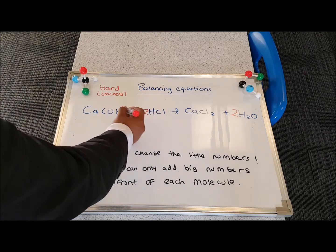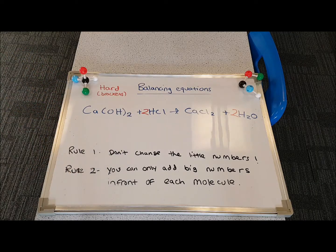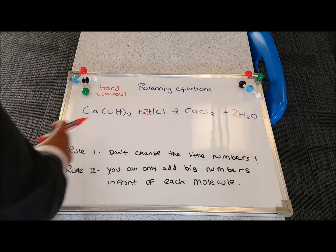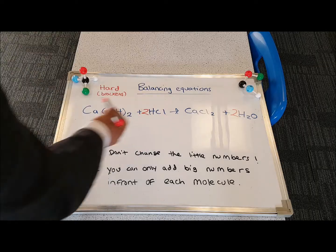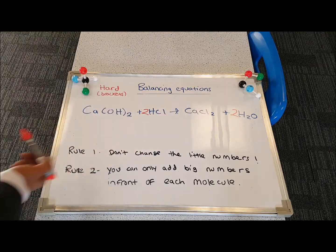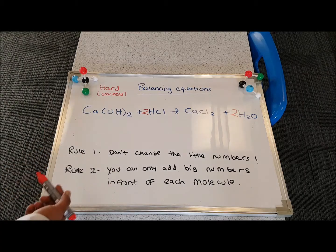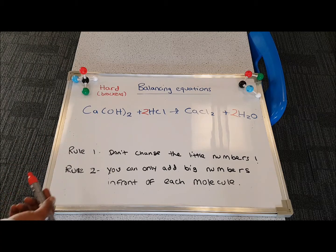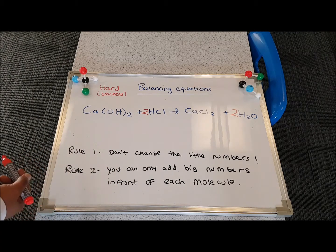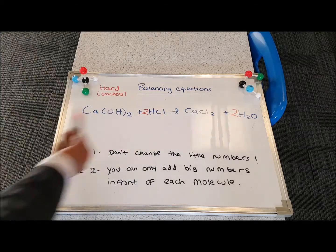Check the chlorines. I've got 2 chlorines because you put a 2 there, and you've got 2 chlorines there. So that means all the atoms now are balanced in this equation. And this will probably be worth 2 marks in the exam because you put 2 numbers to balance it.